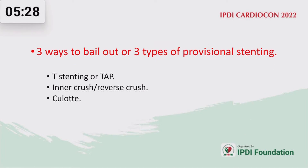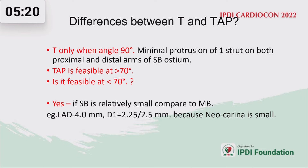There are three ways to bail out in provisional stenting to treat the side branch: that may be T or TAP, reverse CRUSH, or CULOTTE. What is the difference between T and TAP? When the angle is 90 degrees, the typical T is possible. If the angle is more than 70 degrees, then TAP is feasible. But if the angle is less than 70 degrees, TAP is not possible.